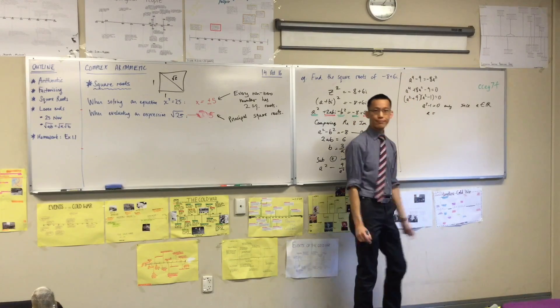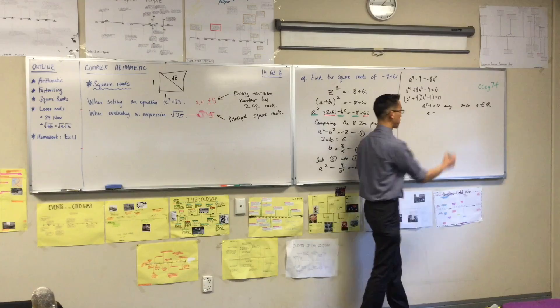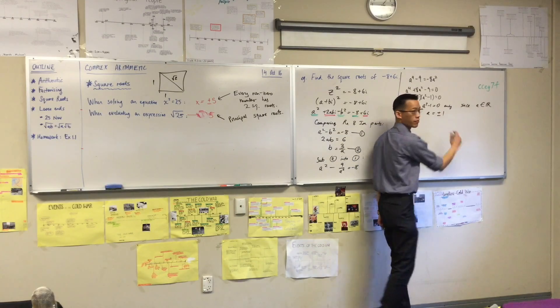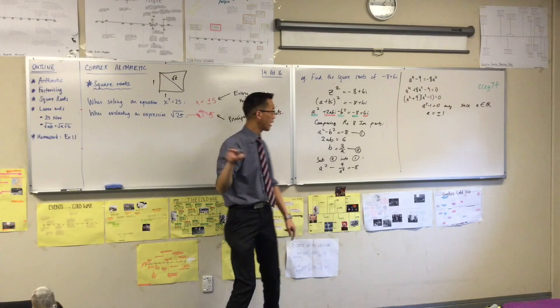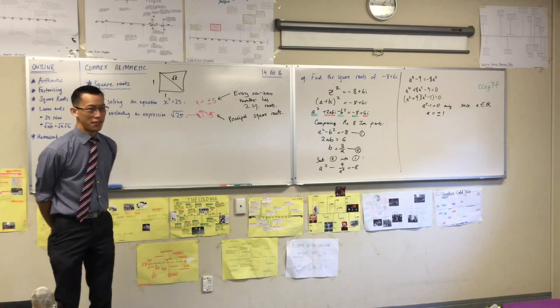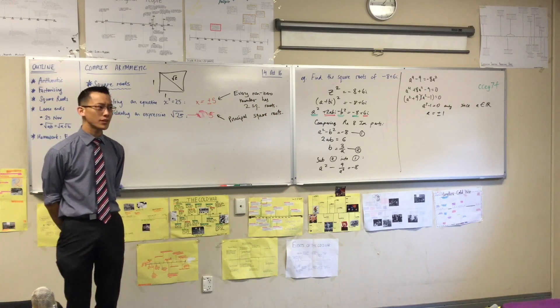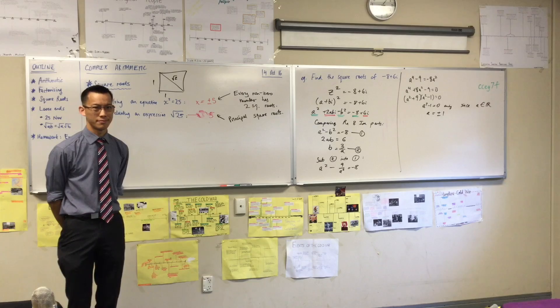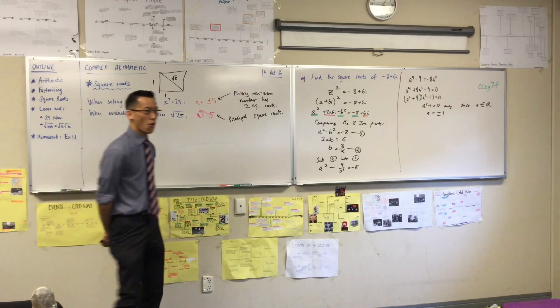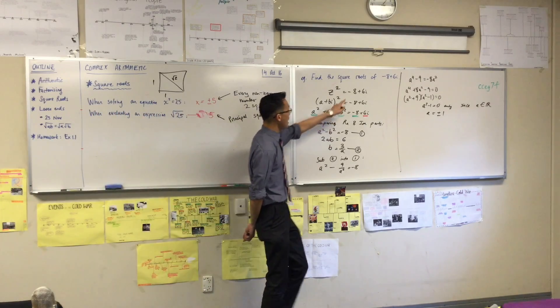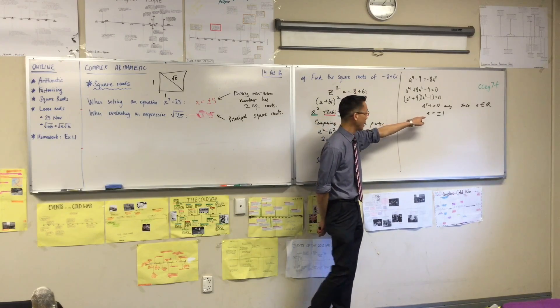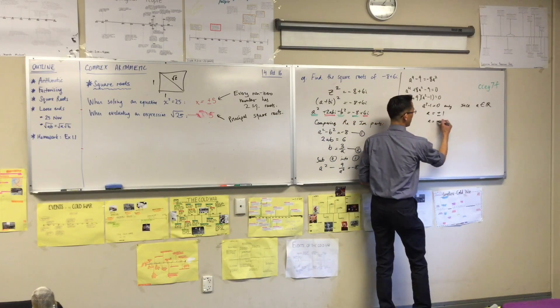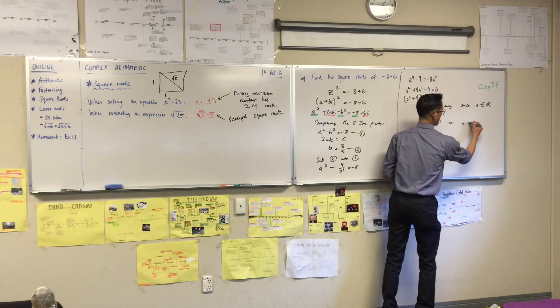All right. So what's a? Plus or minus 1. Remember, we're solving an equation, not evaluating an expression. Now, that's a relief, isn't it? Why is it a relief that I have two answers? Because every non-zero number has two square roots. I better get two values here. So therefore, a is negative 1 or a equals 1.